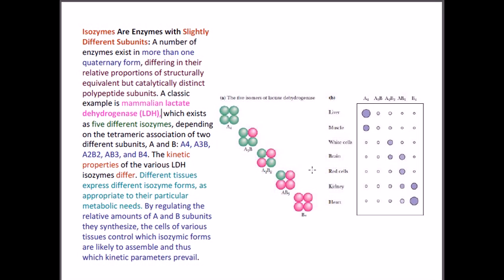Different mixed arrangements also exist: 3A1B is found in muscle; 2A2B is found in white cells and brain; 1A3B is found in kidney. In the liver, mostly A4 type isozyme is found, along with a few A3B type isozymes.